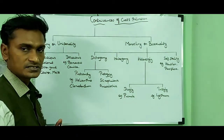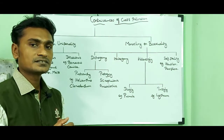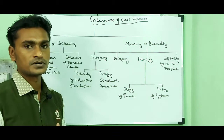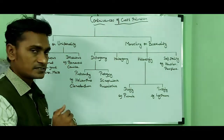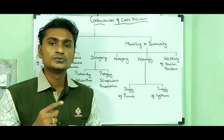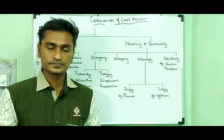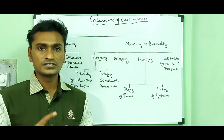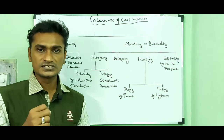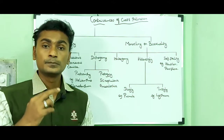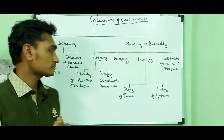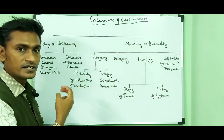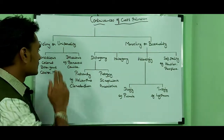Dicliny or unisexuality means the flowers are unisexual. The flower contains either andrecium or gynoecium, so that condition is called a unisexual flower, and this adaptation promotes cross-pollination. Dicliny or unisexuality can be divided into two types: Monoecious and Dioecious.